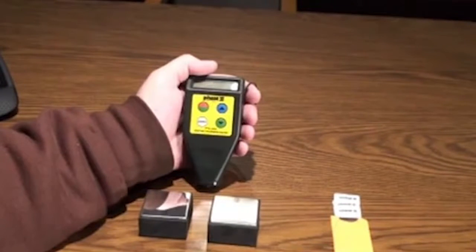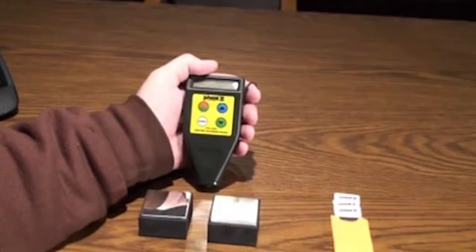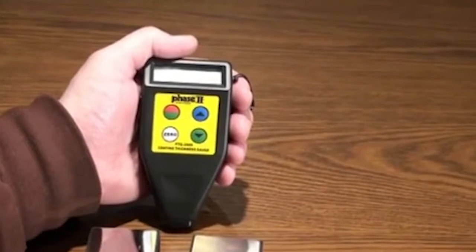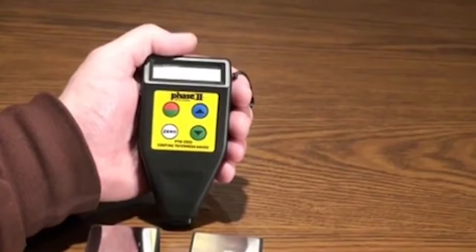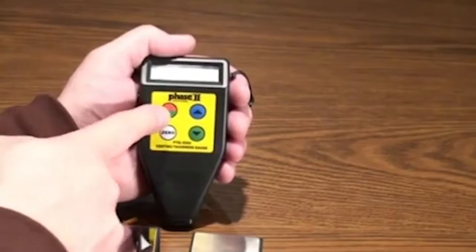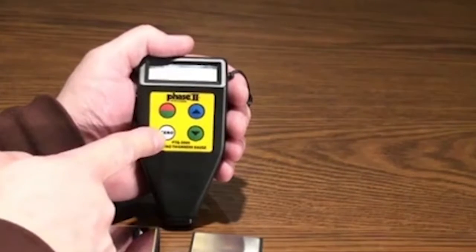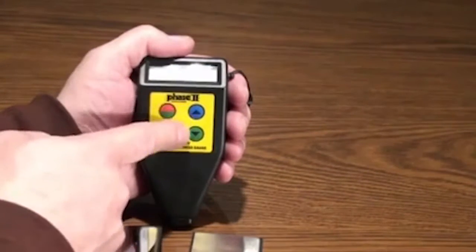Now let's move over to the operation of the coating thickness gauges and how easy it is to utilize the different functions, taking tests, and obtaining readings. As you can see, the keypad layout is quite simple. You have a power key, a zero key, and arrow keys for scrolling.